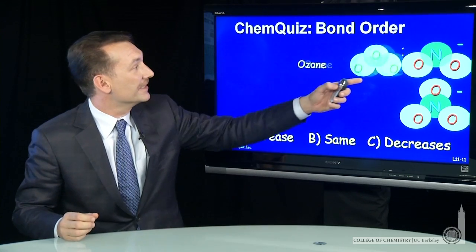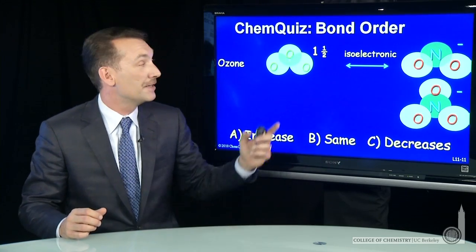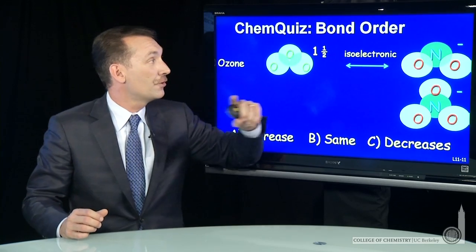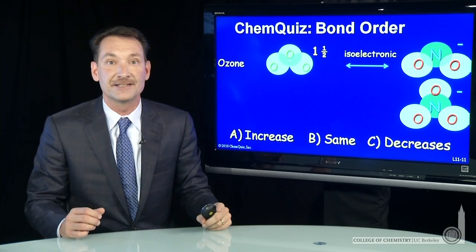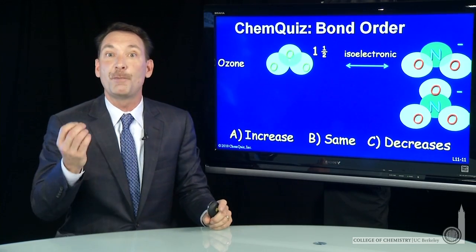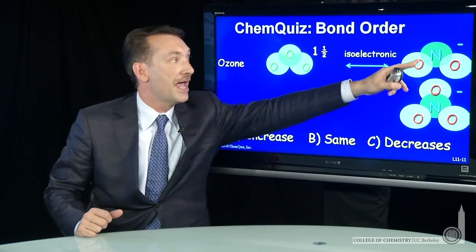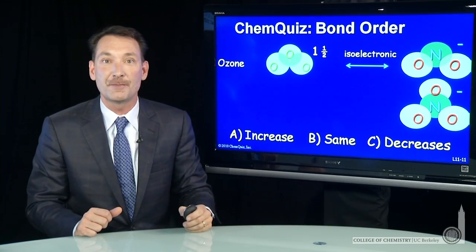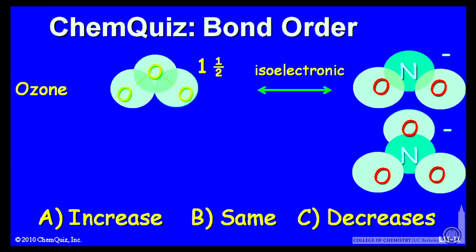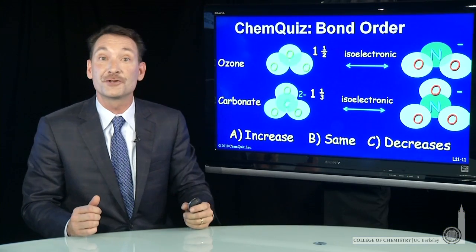We have isoelectronic species — the same number of electrons in both ozone and NO2 minus, and the same number of centers. If we have the same number of atoms and the same number of electrons, they'll bond together in the same way. So both ozone and NO2 minus have a bond order of 1 and 1 half. And if you look at NO3 minus and do that same calculation, it's isoelectronic with carbonate. We already know the carbonate bond order is 1 and 1 third.